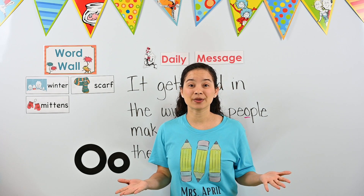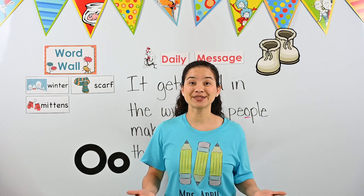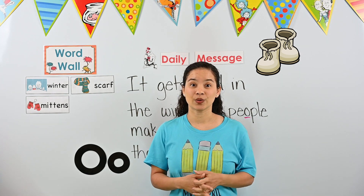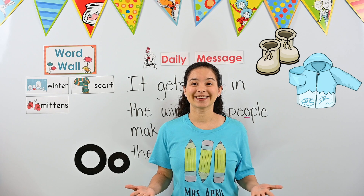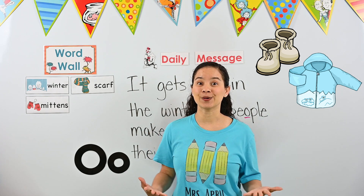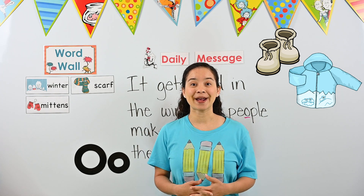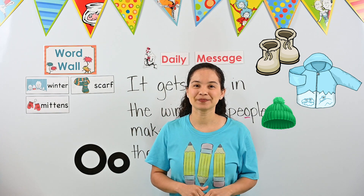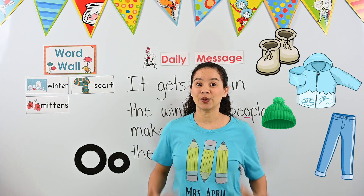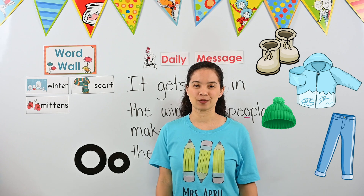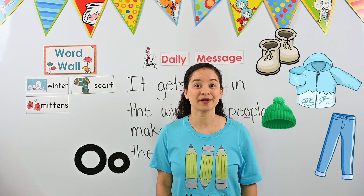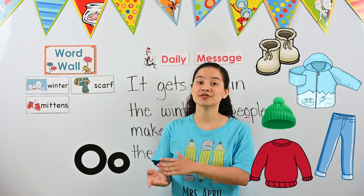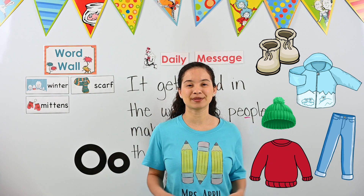Some other things we saw in our book are boots — we wear boots to keep our feet warm in the winter. We also saw a jacket; some people call it a coat. We wear hats on our head to keep our heads warm, and long pants — if we wore short pants our legs would be out and we'd get really cold. People even wear long-sleeved shirts or sweaters to keep them warm.